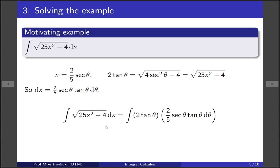So the integral of the square root, the square root part we know is 2 tan theta from right here, and the dx we know is 2 fifths secant theta tan theta d theta. So that's this part right here. This is dx.